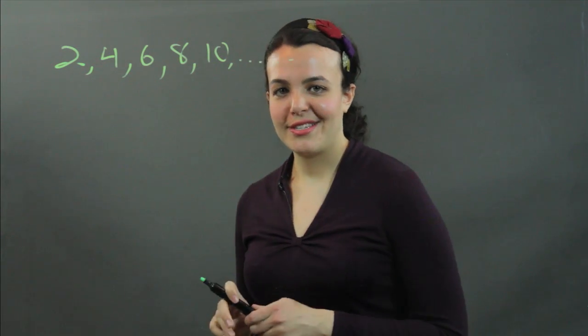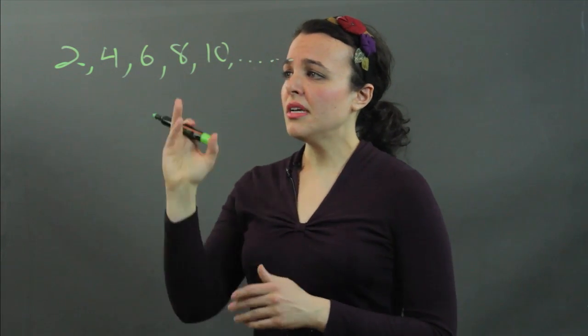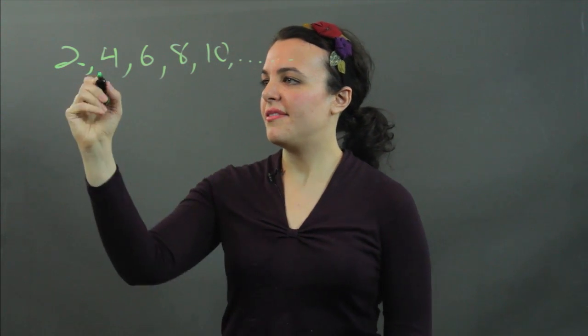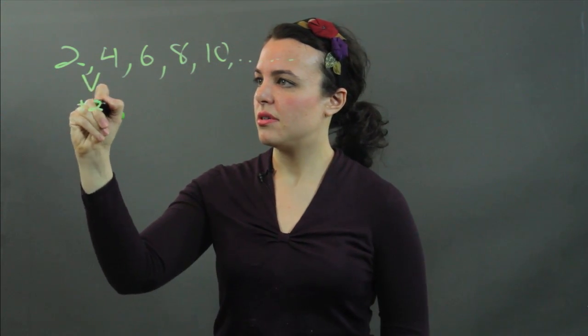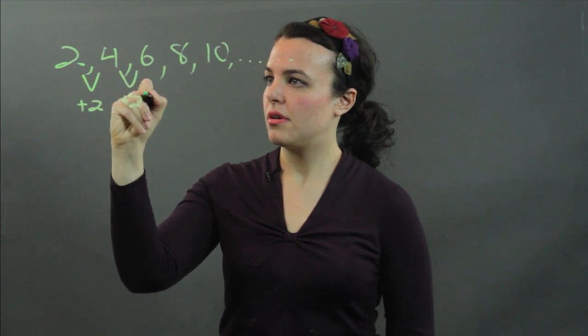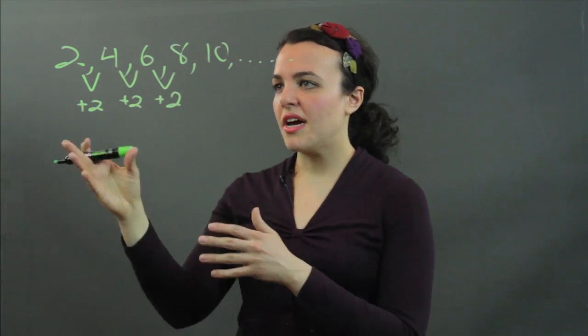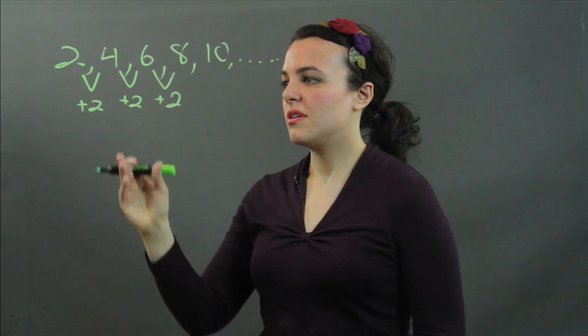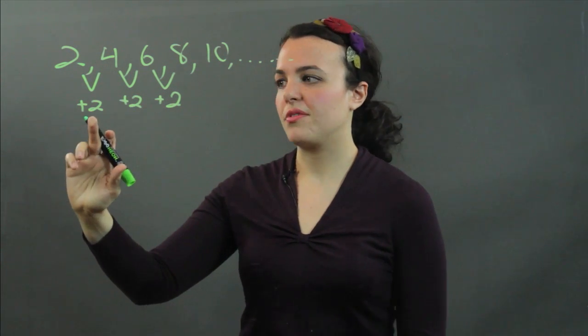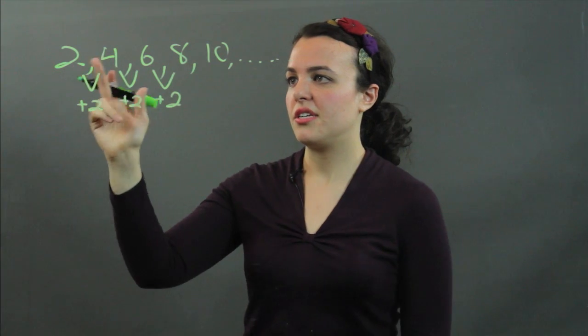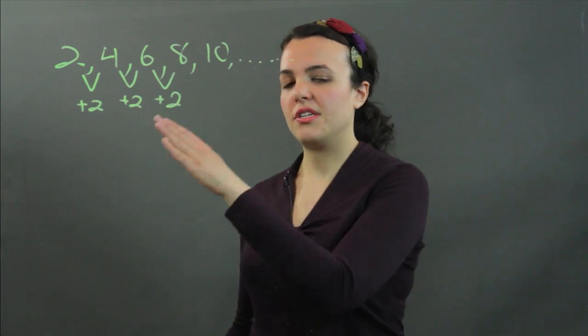You recognize these, these are even numbers. To get these, I have added 2 to each number and so forth. This is how you get an arithmetic sequence. You have what is called a common difference, which is a number that you're adding to each number to generate a continuous sequence.